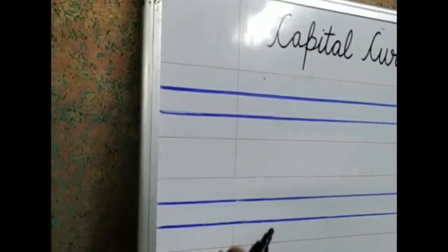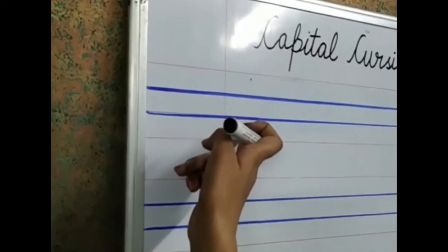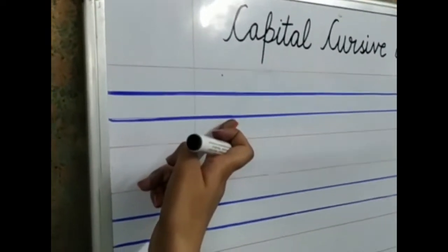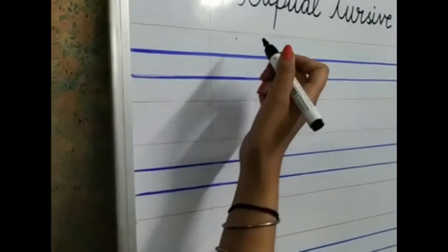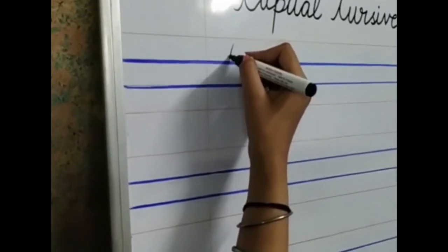And we will write it in three lines. One, two and three. It will not come below the blue line. So let's start writing capital cursive B. So, from the dot, let's make a slanting line.